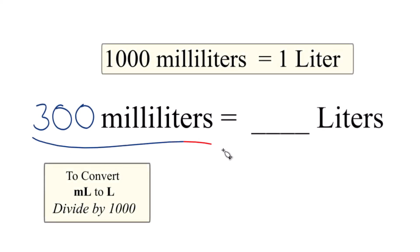So if you need to convert 300 milliliters to liters, here's how you do it. First off, there are 1,000 milliliters in one liter.